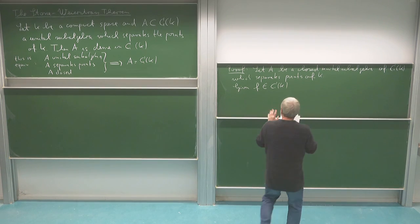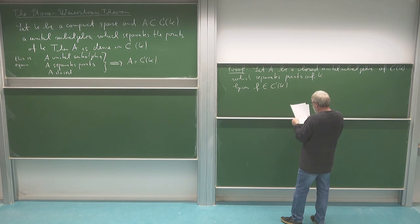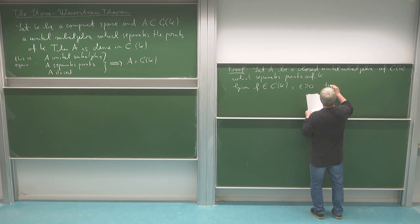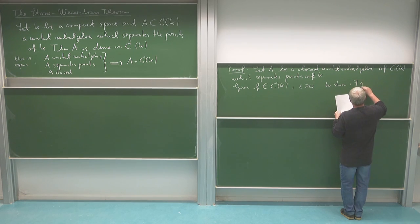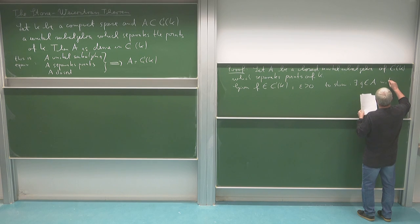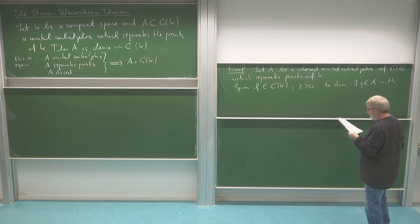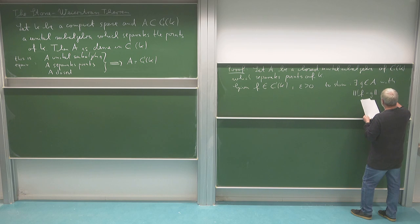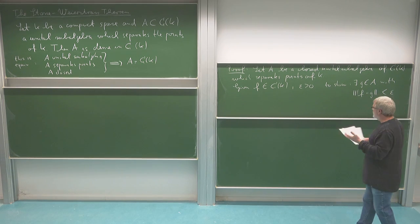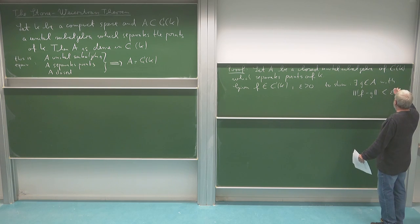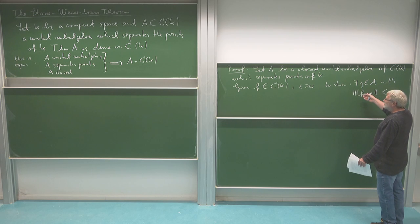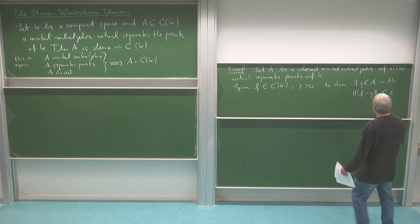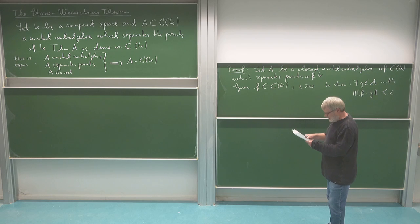In the course of the proof we will use the lemma before, so it's good to know that our A is closed. So we take F in C(K) and what we want to show is that for any epsilon greater than zero we can find a G in A such that the distance between G and F in the supremum norm is less than epsilon. For epsilon equal to 1/n we find G_n closer than 1/n to F, and then G_n converges to F. Since all G_n are in A and A is closed, the limit is also in A.